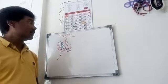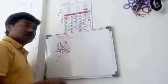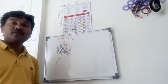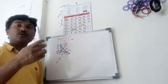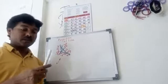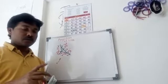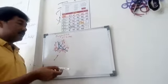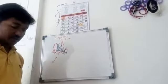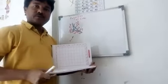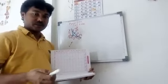Let's start with the new topic. The title of this new topic is Projection of Line, in which the line will be your object for which you will be drawing the front view and top view. This line will be kept with respect to HP and VP in different positions, and you will be drawing the front view and top view for each position.